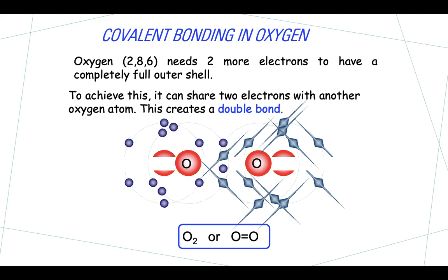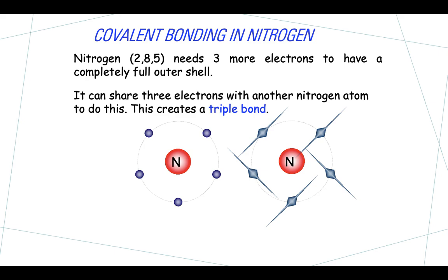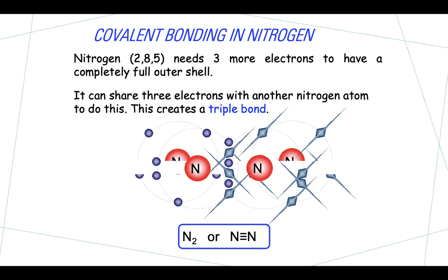That leaves us with nitrogen. Nitrogen has the electron arrangement 2, 5 and needs three more electrons to have a completely full outer shell. It can share three electrons with another nitrogen atom, and when those three electrons are shared, it creates a triple bond. It is still two nitrogen atoms joined together — N2 — but when we draw it out with solid lines representing covalent bonds, we draw three separate lines to represent those three pairs of electrons being shared by the nitrogen atoms.